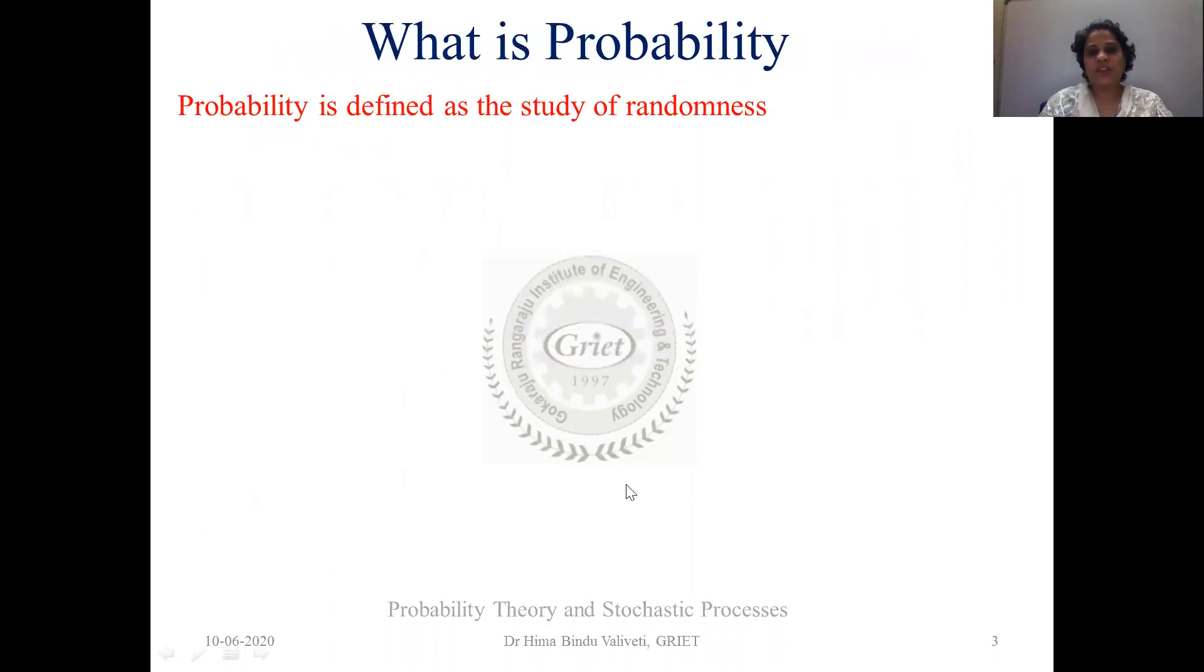To start off with the very first thing, what is Probability basically? We use that term many number of times. I mean, what is the probability of the traffic being cleared in another 10 minutes time, so on and so forth. We use them in our regular vocabulary or regular talks. So basically when you talk about Mathematical Analysis or when you talk about technical aspects of it, it is the Study of Randomness. It is defined as the Study of Randomness. Now, what is Randomness? What is basically Random in Nature?